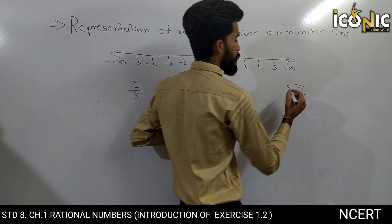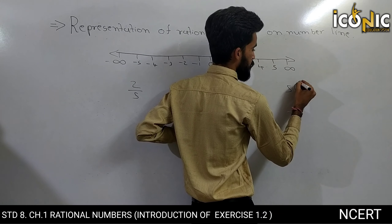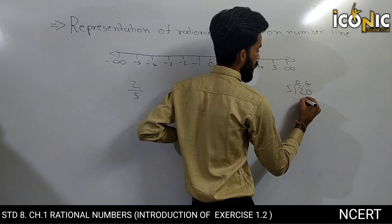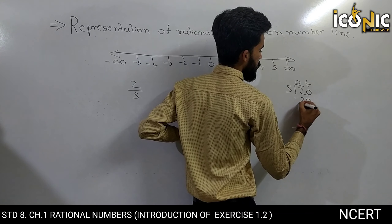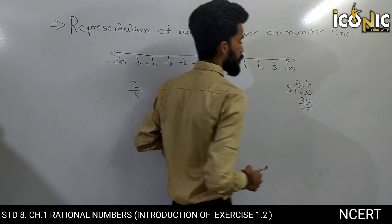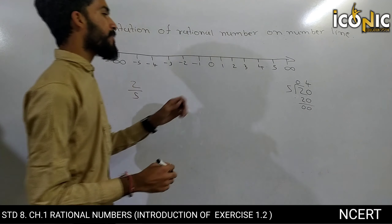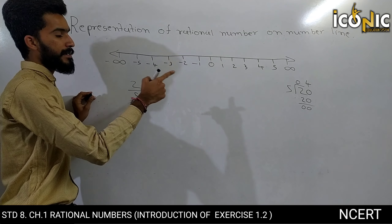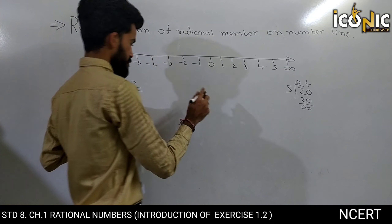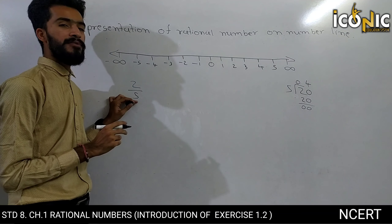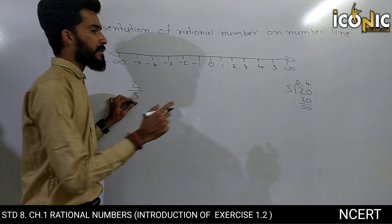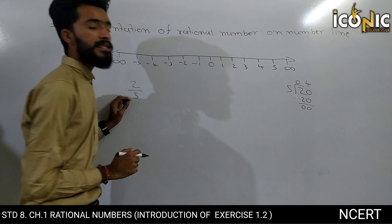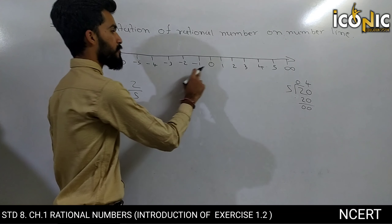Toh kya hoga? Hum 2 divided by 5 karte hain, toh aata hai zero point four. Toh yaani ki two divided by five kahin par zero aur one ke beech mein likhayega.